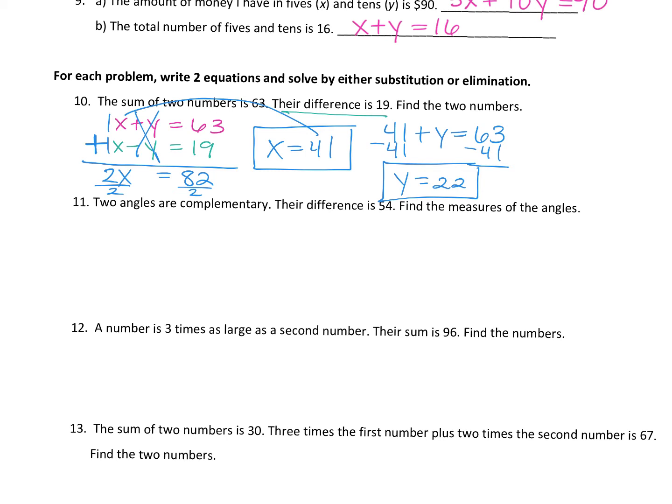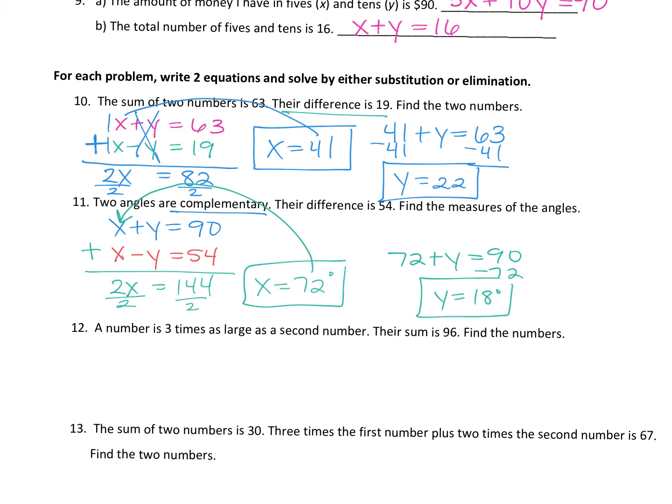Okay. So what's one equation for number 11? Yes. x plus y equals 90. Two angles are complementary, right? x plus y equals 90. What's the other one? Yeah. x minus y is 54. x minus y is 54. Their difference, right? Difference is subtraction. Find the measures of the angles. So you would solve this by adding them together. Very similar to the last one. 2x equals 144. Divide by 2. You want to do this? You're welcome to. Come on up. So x is 72. Notice we're talking angles. So 72 what? 72 degrees, right? Label it degrees. The measure of the other angle then is what? 18. Take away the 72. So y is 18 degrees. Okay?